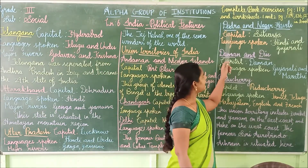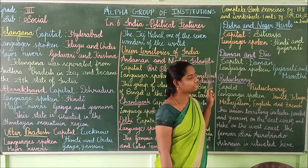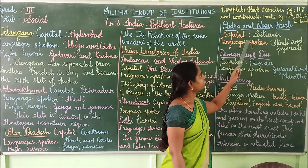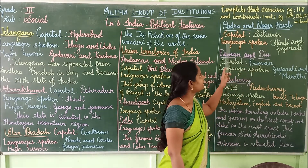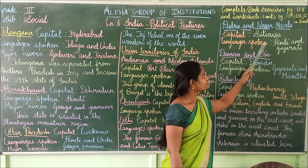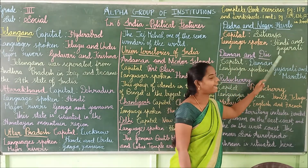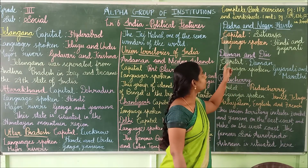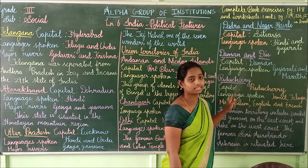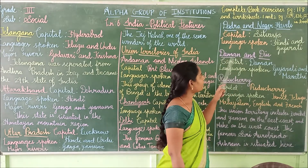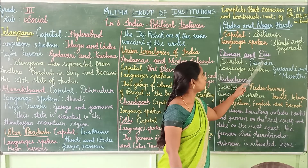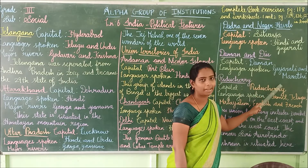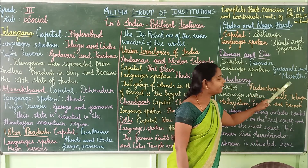The next union territory is Dadra and Nagar Haveli. Its capital is Silvassa, and the languages spoken are Hindi and Gujarati. Next is Daman and Diu. Its capital is also Daman, and its language spoken is Gujarati and Marathi.